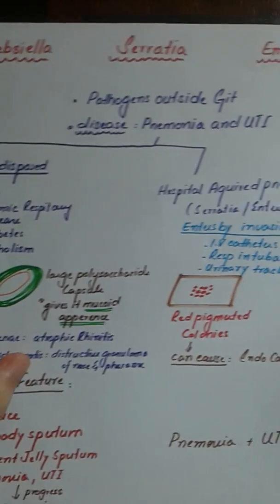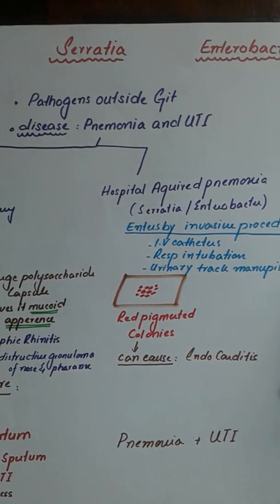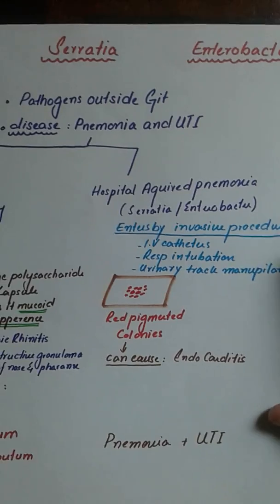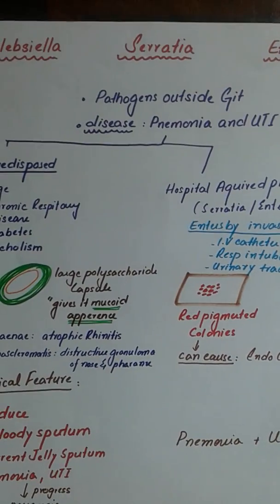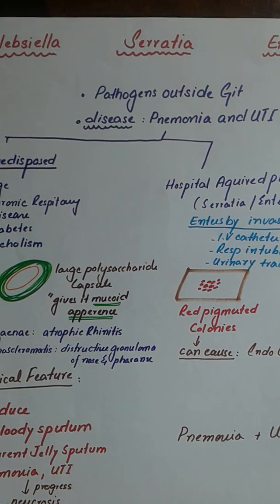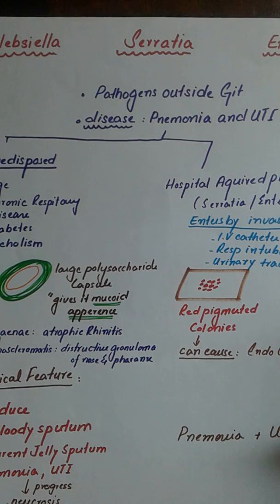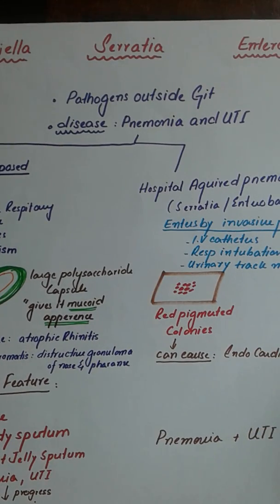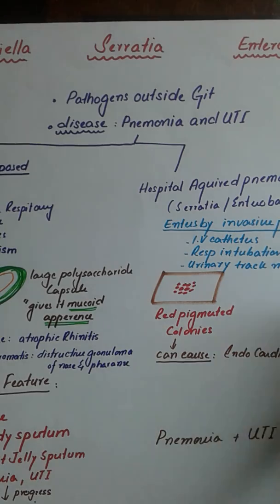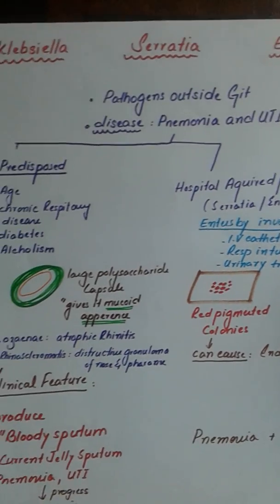Klebsiella, Serratia, and Enterobacter are three pathogens that live outside the GIT, and when they come inside the GIT they basically cause two types of diseases. The first disease is pneumonia and the second is UTI. Now there is a specific differentiation between the two.